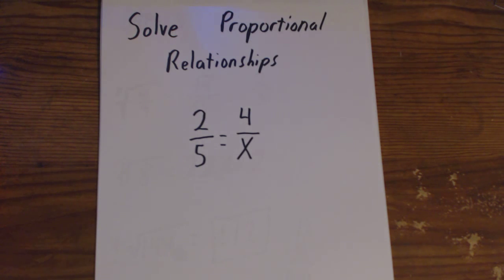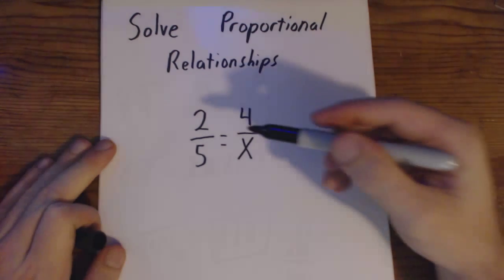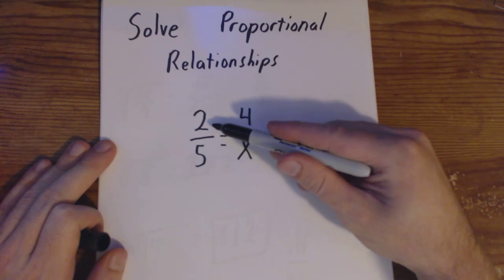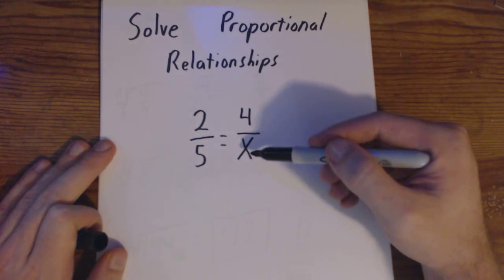Today we're going to talk about solving proportional relationships. If you look at this problem, you're going to see that we have two things that are set equal to each other. In this case, we have a fraction 2/5 is equal to 4 over x.